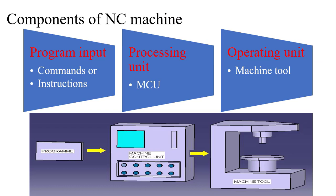What are the components of the NC machine? There is the program input, which provides the commands or instructions. There is the processing unit, called the MCU — the Machine Control Unit. Then the third one is the operating unit, which is the machine tool that is actually working. As you can see in this image, the program is fed into the Machine Control Unit, which reads and processes it and sends the data to the machine tool. In the machine tool, the axes, work table, or tool are moving so that you get the desired output or product. These are the three major components of the NC machine.